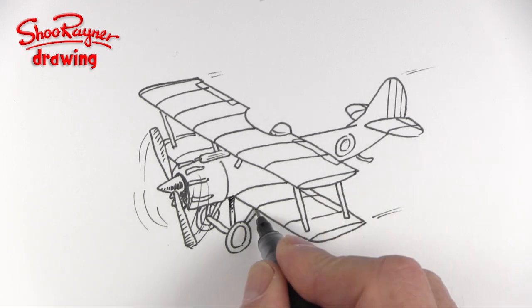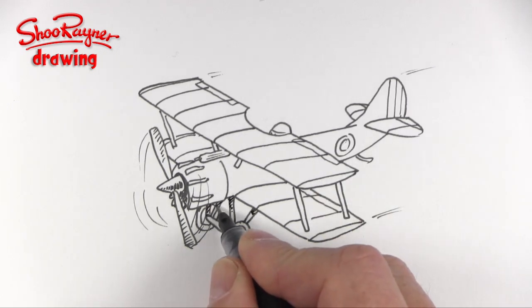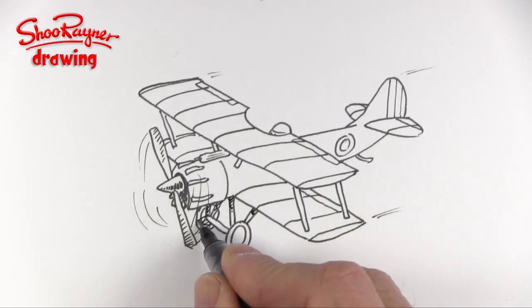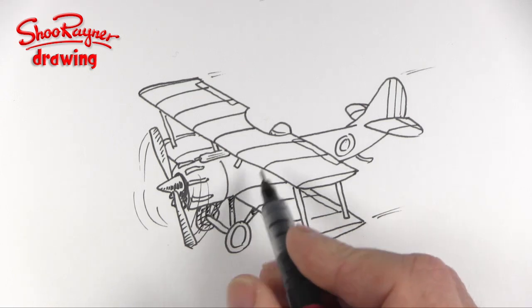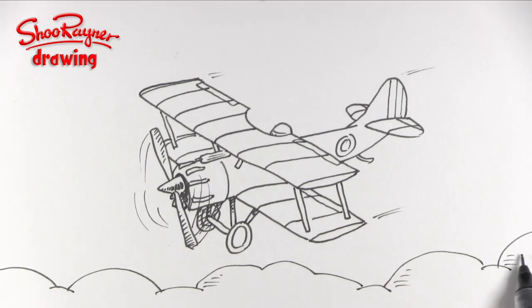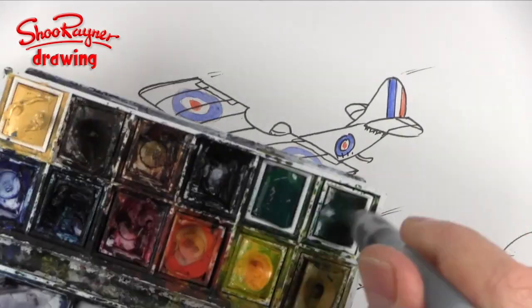Whoosh marks on the back. You can put some shading in down there just to kind of send those things to the back a bit. Just add some clouds, all you need to do is add some paint and there you go, how to draw a First World War biplane.